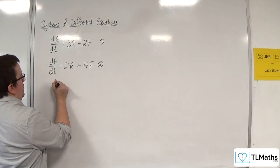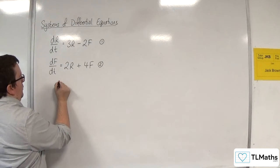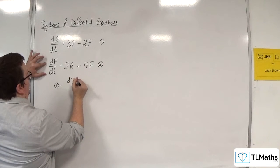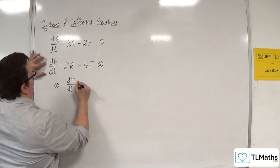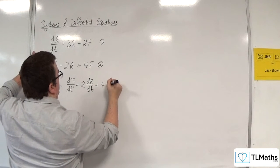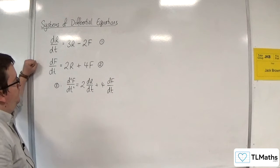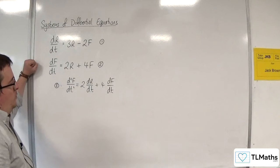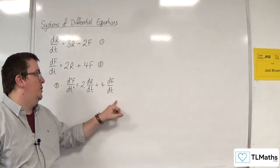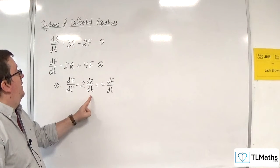And for equation 2, I'm going to differentiate it. So let's call this now equation 3. I'm going to differentiate equation 2. So I'm going to get d²F/dt² is equal to 2 lots of dR/dt plus 4 dF/dt. So what I want to do is I want to get an equation here, a differential equation, that just involves F. So I don't want the dR/dt.